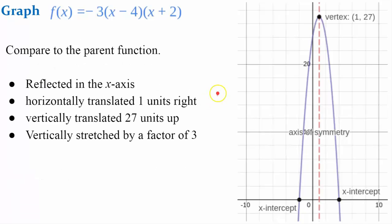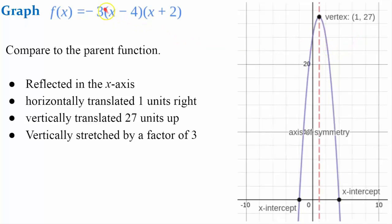Comparing this to the parent function, we know that it's a reflection in the x-axis. It is horizontally translated one unit to the right and 27 units up, and it's a vertical stretch by a factor of 3.